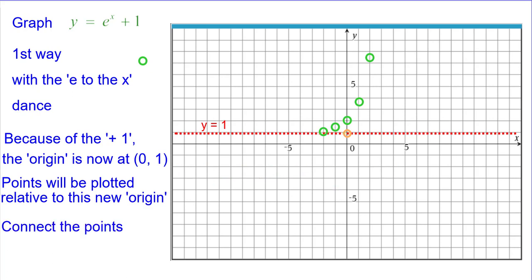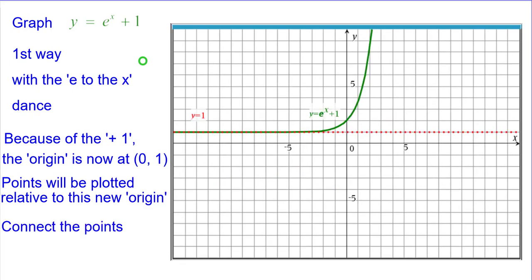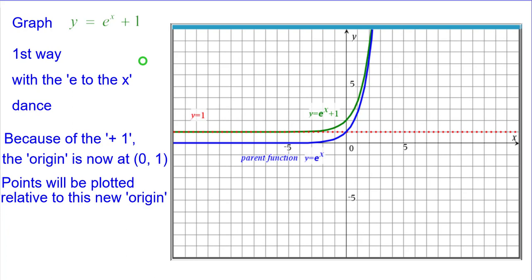We'll connect the points. We already have the asymptote there and this is a graph of y equals e to the x plus 1. Let's compare it to the parent function, y equals e to the x, which has an asymptote at the x axis, y equals 0.